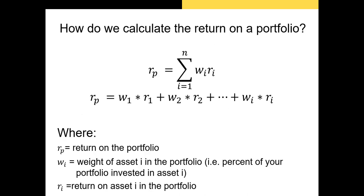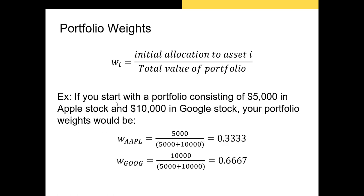Now let's talk about how you calculate the return on your portfolio. We calculate the return on a portfolio by summing up the return of each asset multiplied by the weight of that asset. In other words, we take the weight of each security multiplied by its return in the period and sum all of those up to get RP, the return on our portfolio. We calculate portfolio weights by dividing the value of an asset at the beginning of the period by the total value of the portfolio.